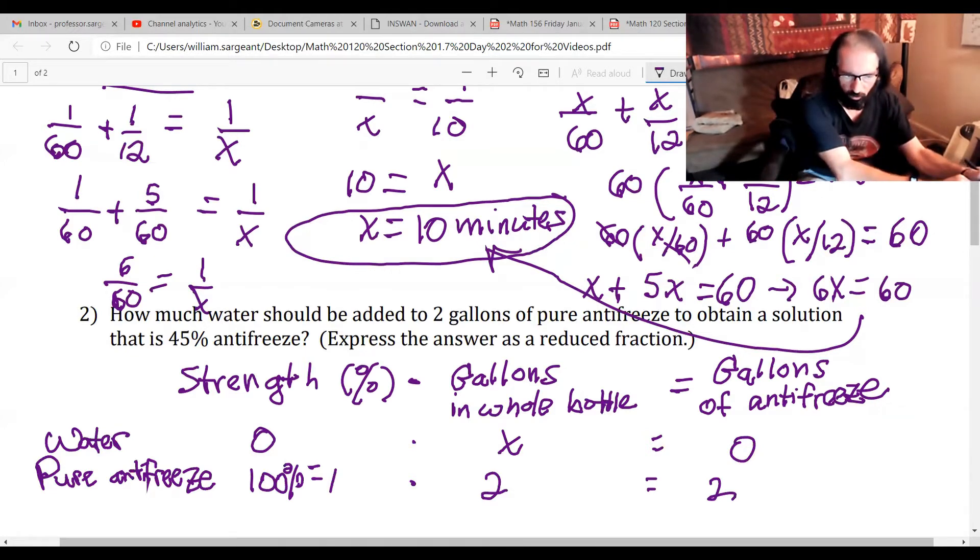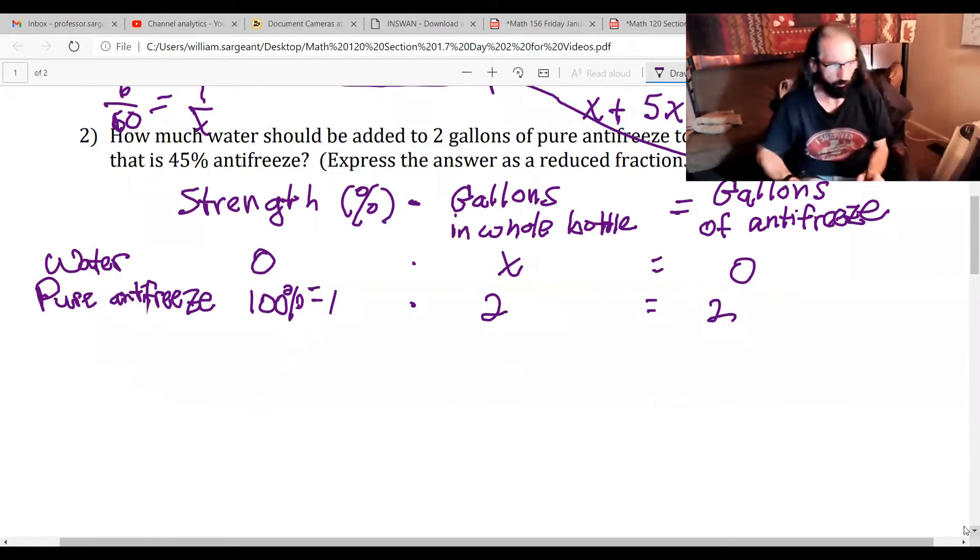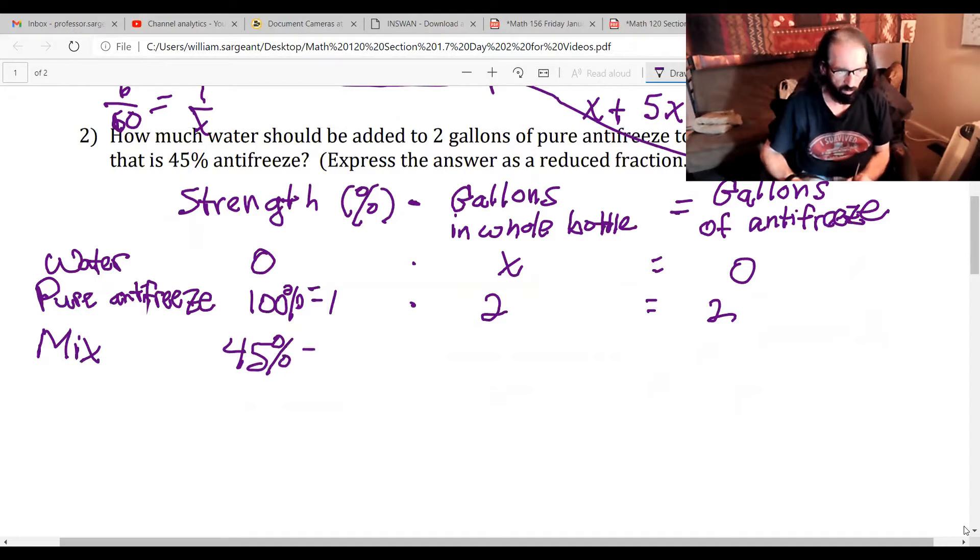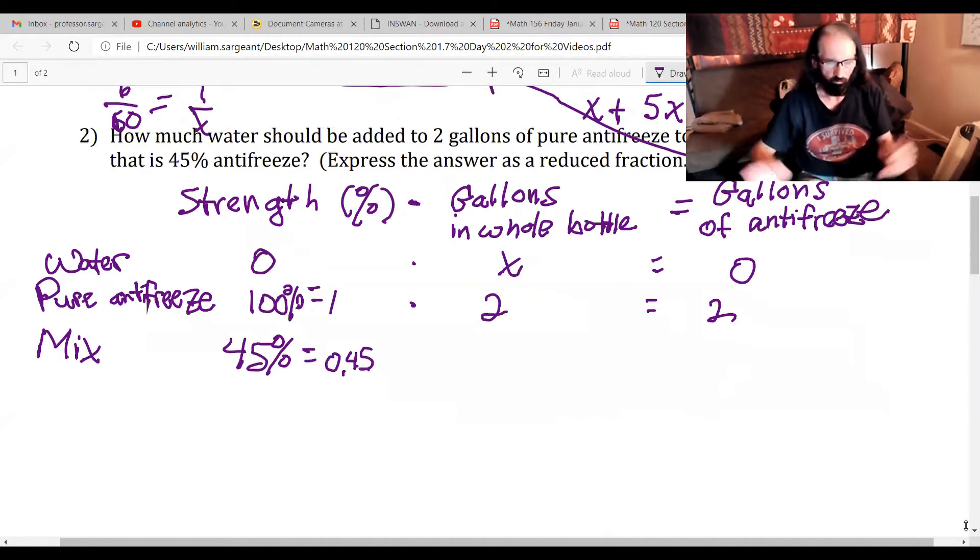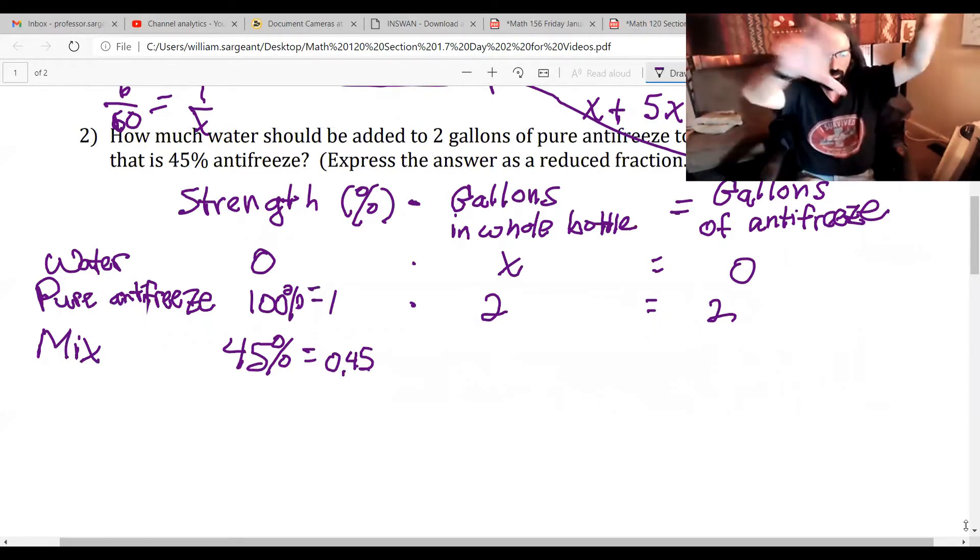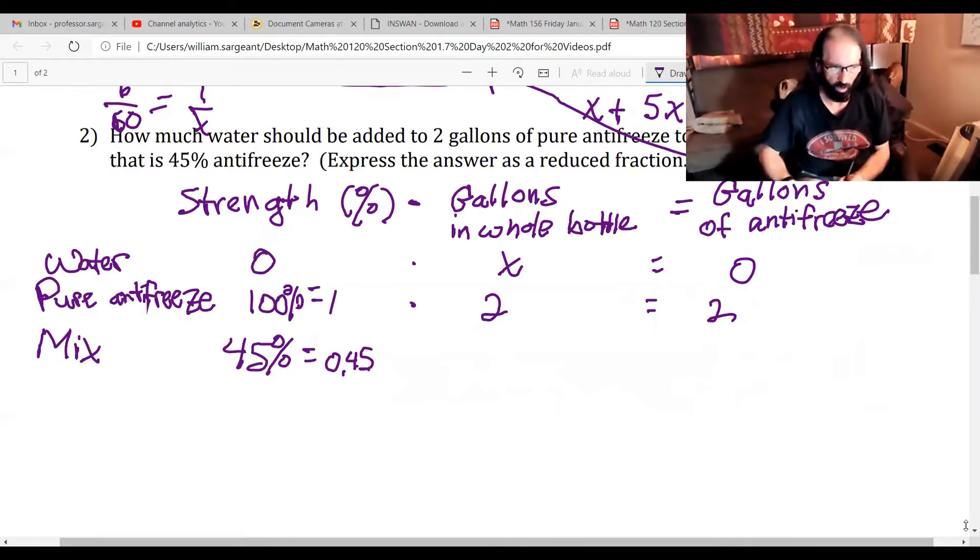Finally our mixture, we need a third row here, is supposed to be 45 percent strong in antifreeze, or 0.45. Well the gallons from our two original bottles in our mixture bottle are going to total up to x plus two, and so we'll have 0.45 times (x + 2).